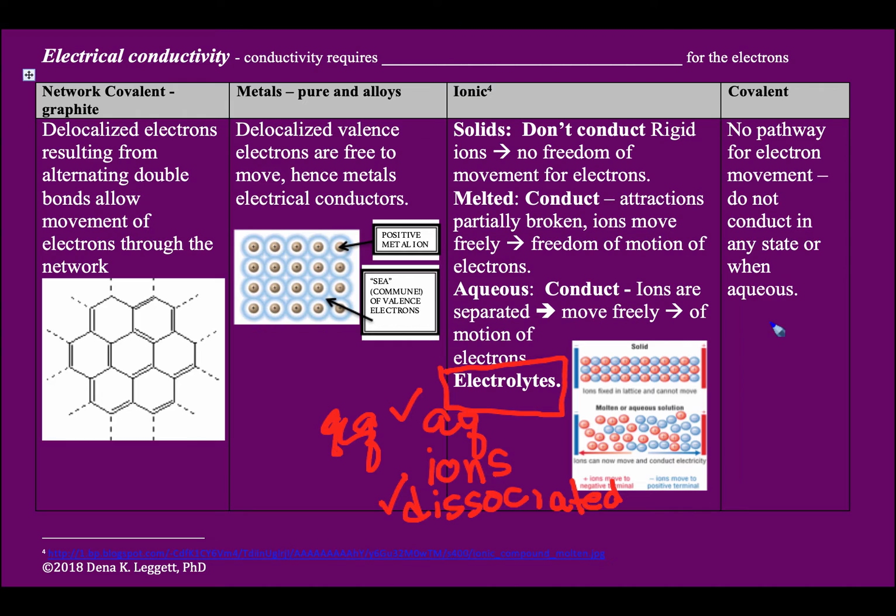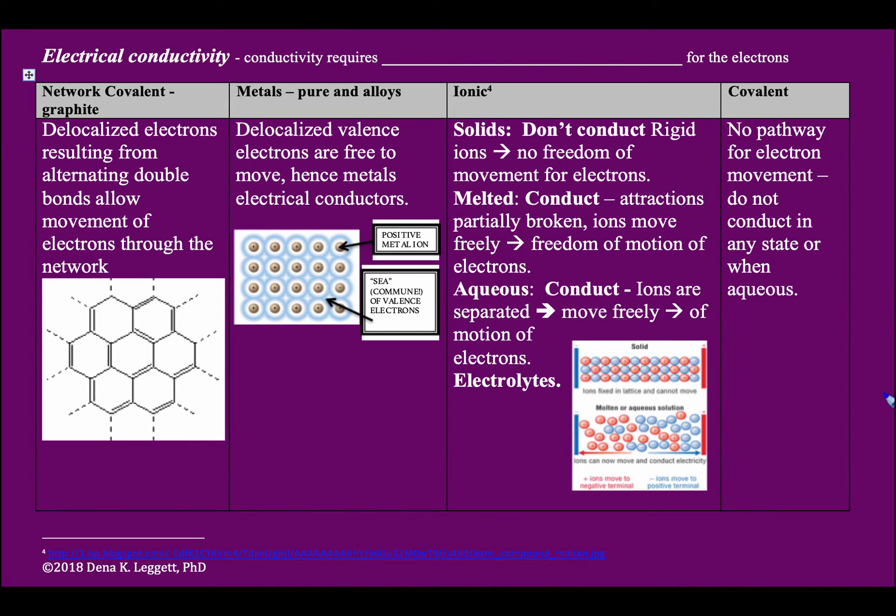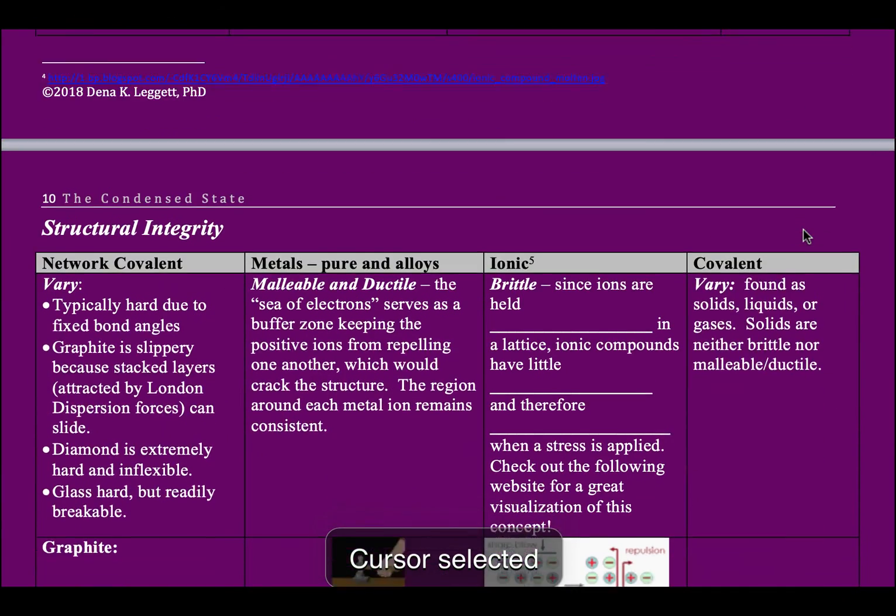Covalent molecules, we're going to be looking at not conducting at all. We're talking about discrete molecules with no conductivity, whether they are solid, liquid, or in the aqueous phase. All right, that's one property, electrical conductivity.